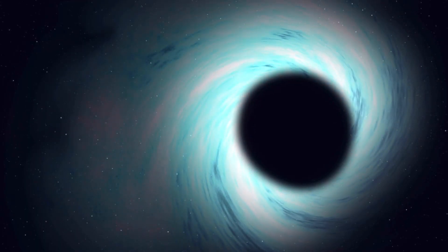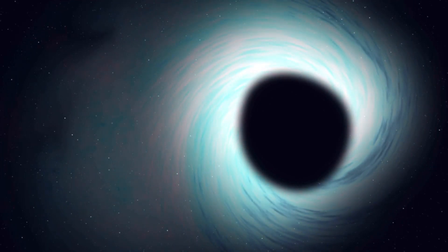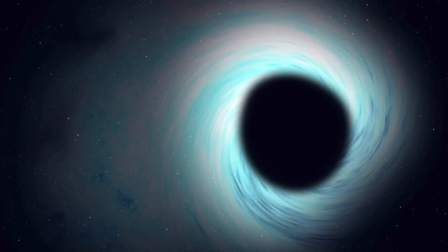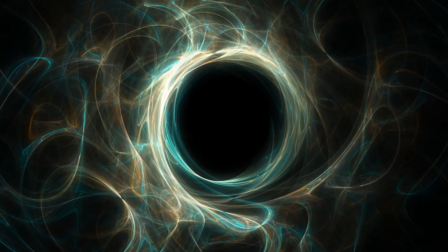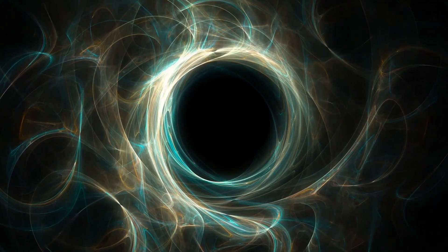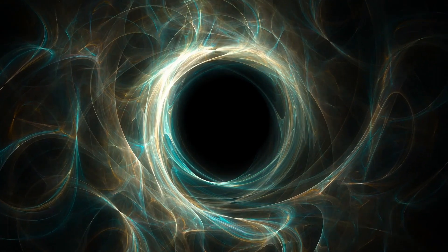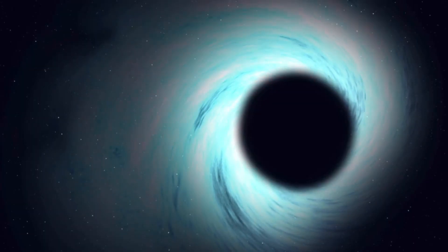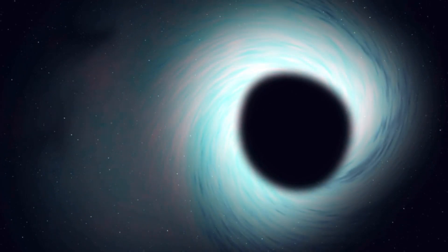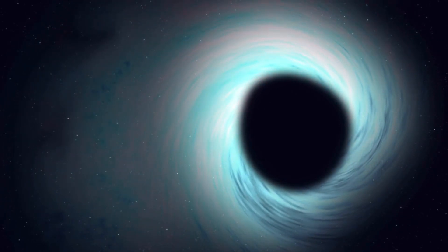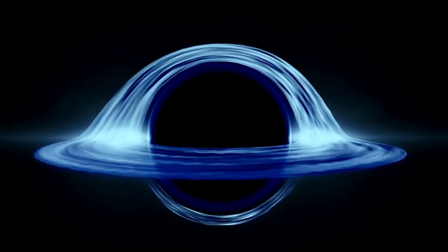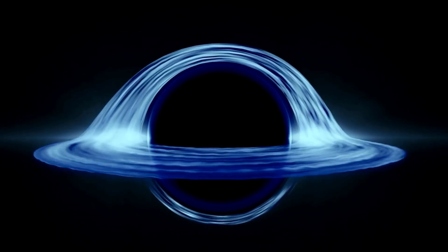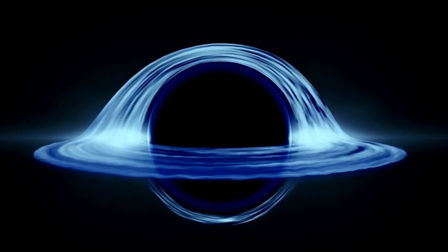This black hole was photographed over several nights, with each image providing additional evidence. By stitching these photos together, researchers determined that black holes have three distinct layers. Contrary to the belief that black holes are merely vast voids, they are far more complex. To reach the void within a black hole, one must first traverse the initial two layers.